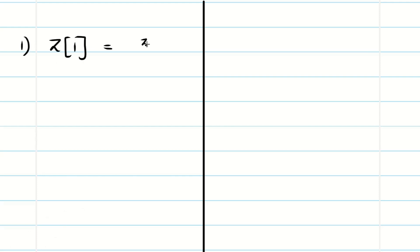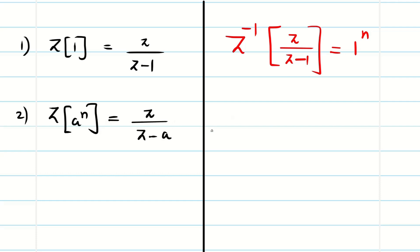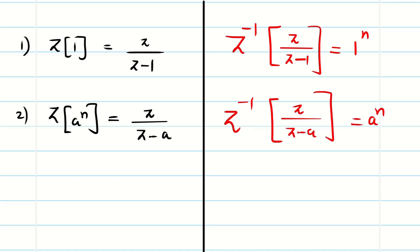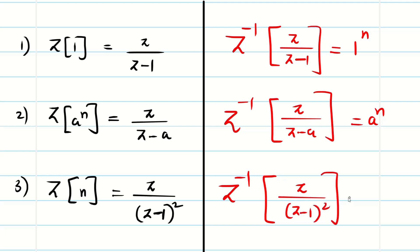Let us recall some formulas which we learned in the previous video on z-transform. Z of 1 is z by z minus 1. For the inverse formula, z inverse of z by z minus 1 is 1, or 1 power n. Similarly, z of a power n is z by z minus a, and z inverse of z by z minus a is a power n. Also, z of n is z by z minus 1 whole square, so z inverse of z by z minus 1 whole square is n.